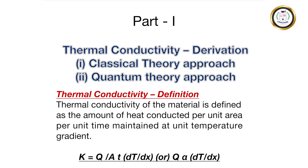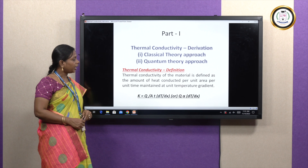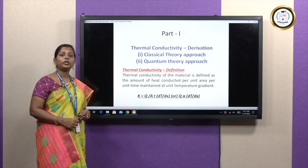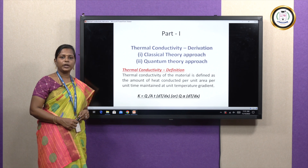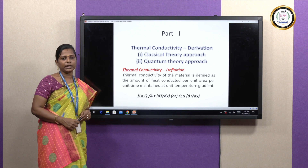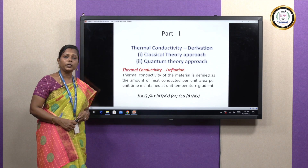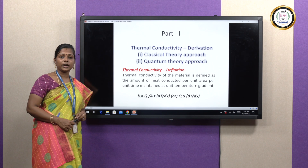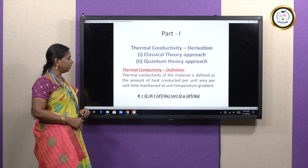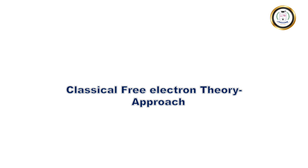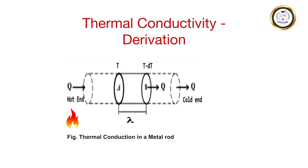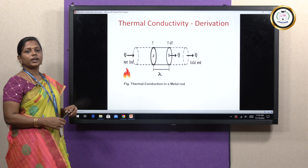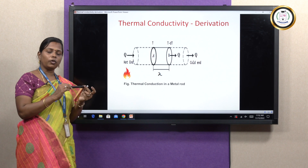Thermal conductivity is directly proportional to the amount of heat radiated per unit area per unit time in order to maintain unit temperature gradient. Heat is directly proportional to the temperature gradient. We will now start with the classical free electron theory approach to derive thermal conductivity K, by first considering one rod.